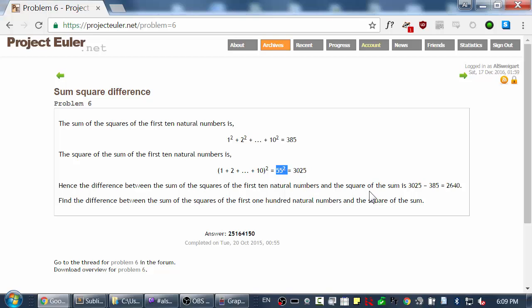And so the difference between these two numbers is 3025 minus 385, which is this number, 2,640.